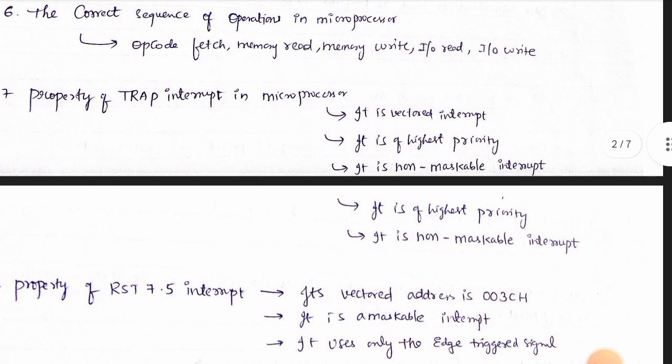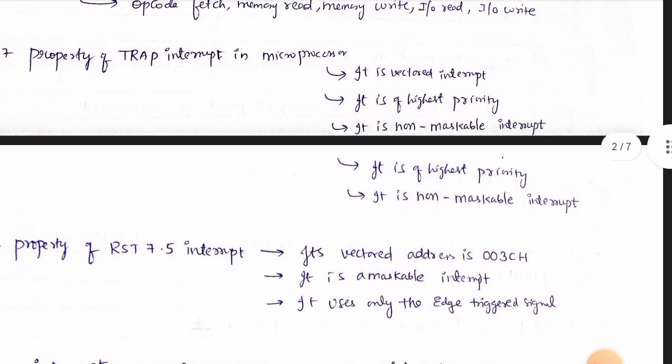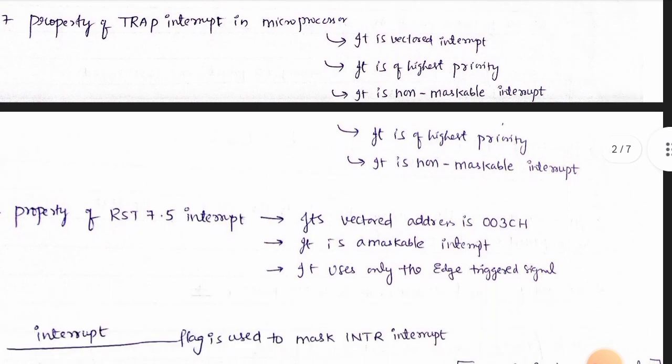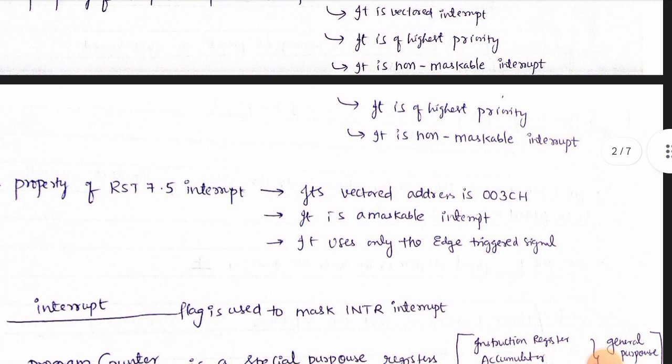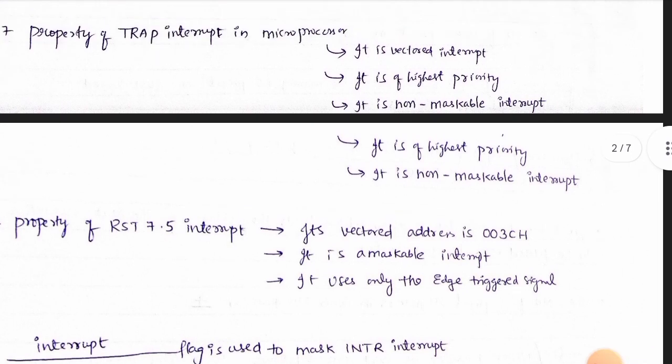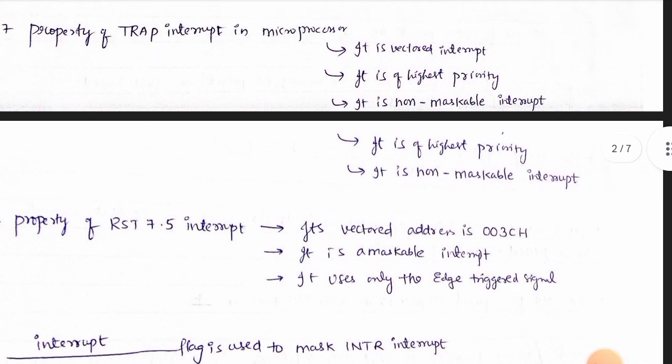Note that the properties of trap interrupts will be crucial. For example, if there is a trap interrupt, it has the highest priority.